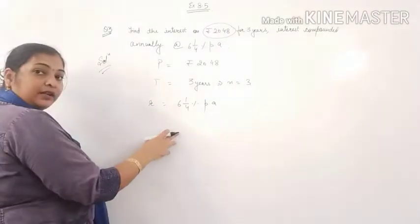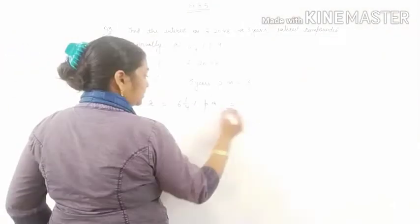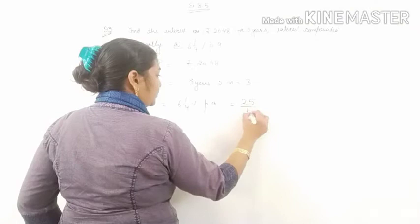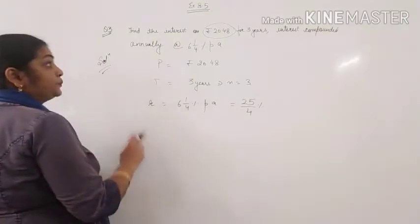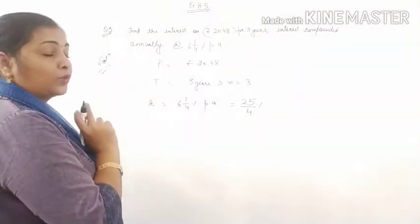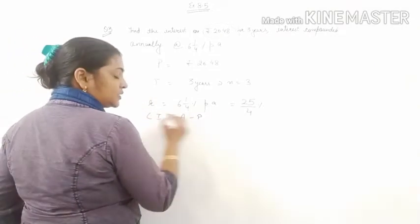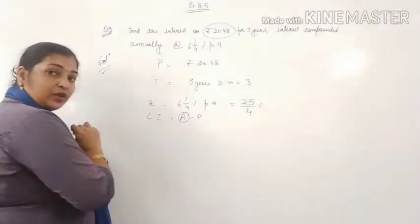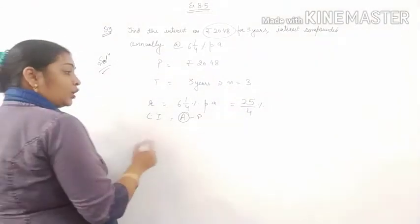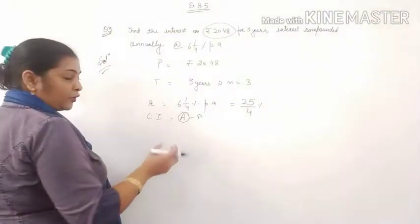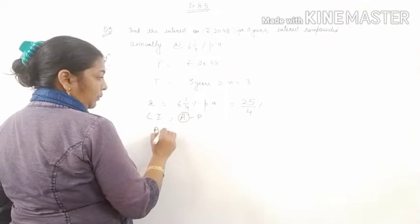First of all we will convert it into improper fraction, that will be 25 by 4%. Now we need to find compound interest, and the formula for compound interest is amount minus principle. That means first of all we need the amount. Or you can also apply the direct formula but I will find out amount first of all.